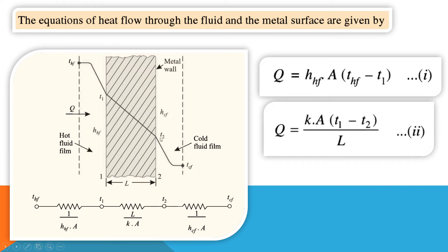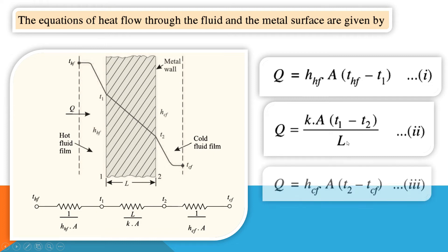For the wall we apply Fourier's law: Q equals minus K·A·dT/dx. Here K is the thermal conductivity, A is the surface area perpendicular to the direction of heat flow, T1 and T2 are the temperatures on each side of the wall, and L is the thickness of the wall. On the other side of the wall, Newton's law of cooling Q equals HA·ΔT is applied for the cold fluid, where the temperature difference is T2 minus T_CF, for the hot fluid side it is T_HF minus T1, and for the wall it is T1 minus T2.